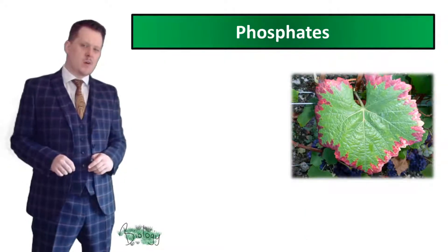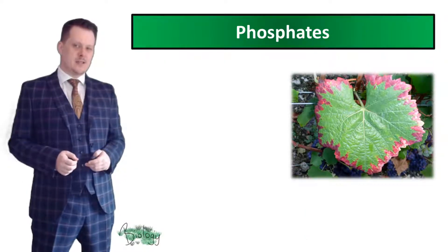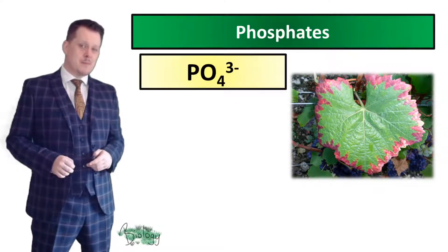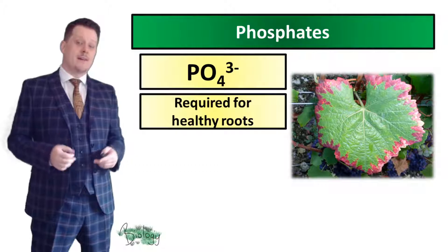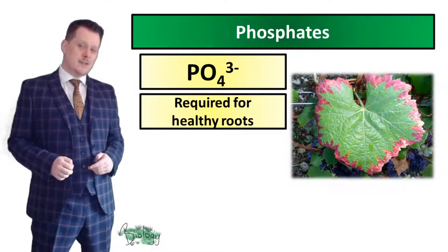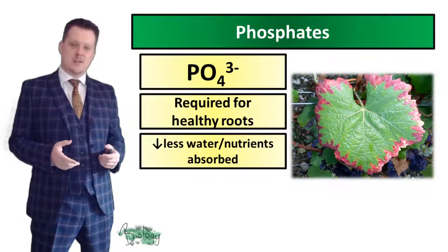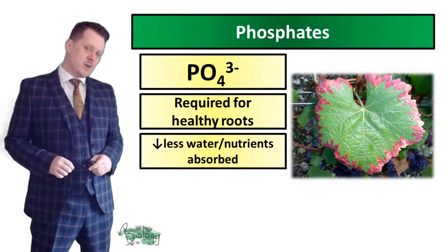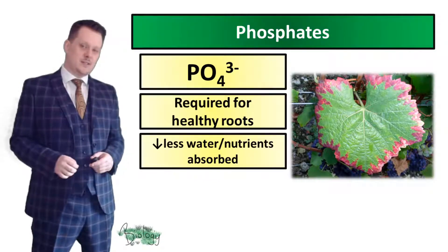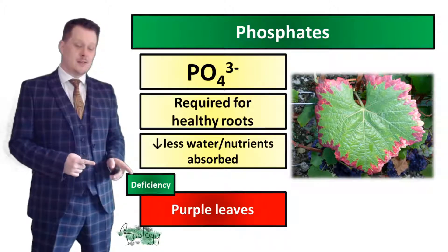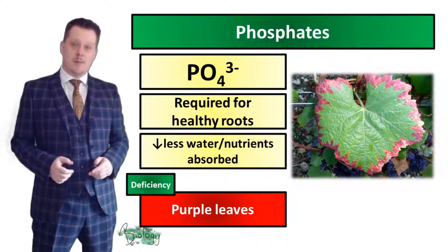Which means we've got one more thing to look at: phosphates. The phosphate ion is PO4-. Phosphates are required for healthy roots. If there is a phosphate deficiency, roots will absorb less water and fewer nutrients. This is probably the easiest deficiency to diagnose because when you have a phosphate deficiency the leaves turn purple.